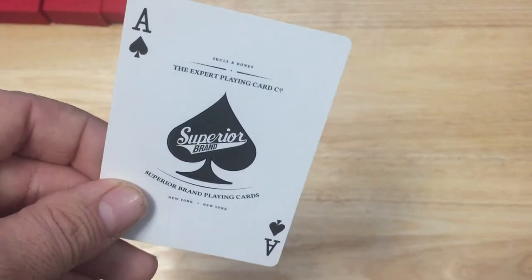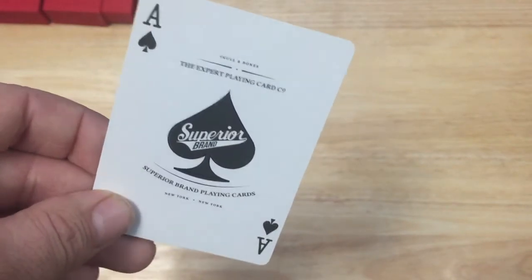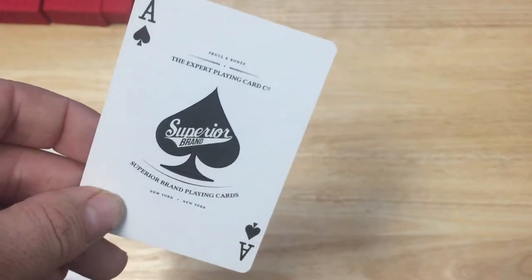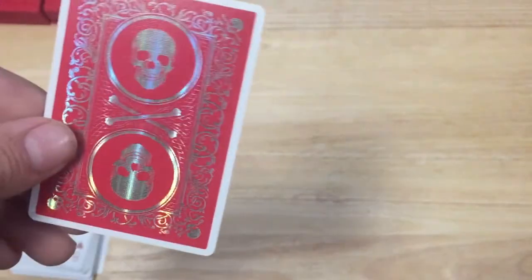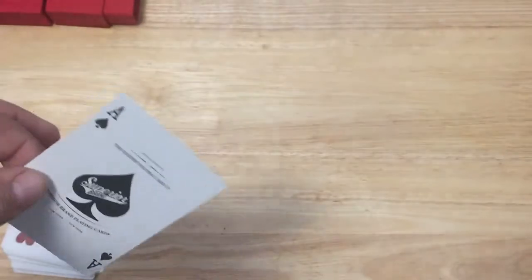And the Ace of Spades. Skull and Bones, the Expert Playing Card Company, superior brand, New York, New York. It's very nice now. I was half expecting to see Jackson Robinson's signature.